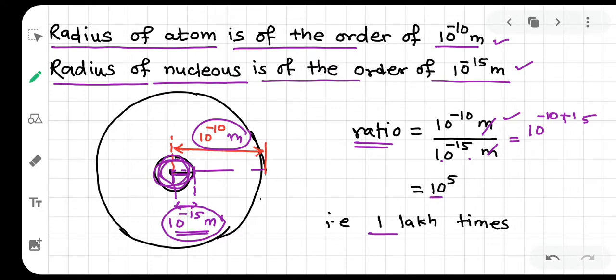This will be 10 to the power minus 10 plus 15, which is 10 to the power 5, that is 1 lakh. This means that the radius of the atom is 1 lakh times the radius of the nucleus.